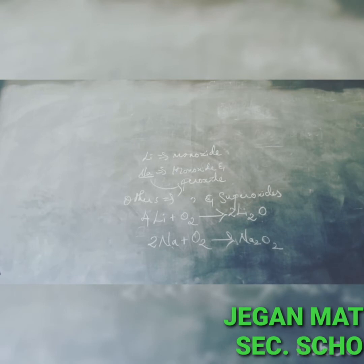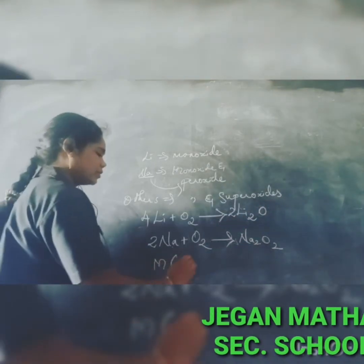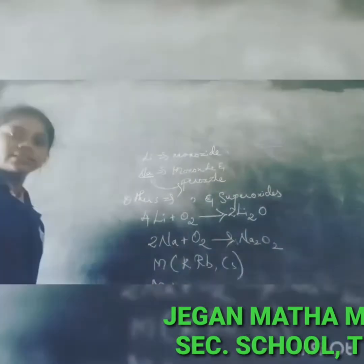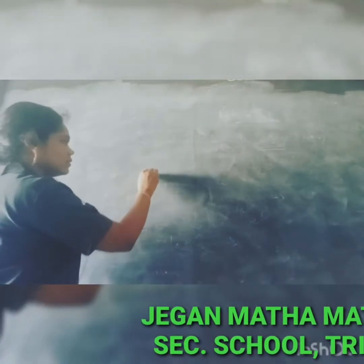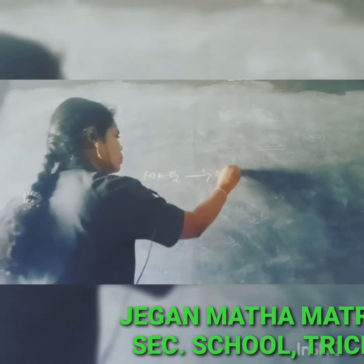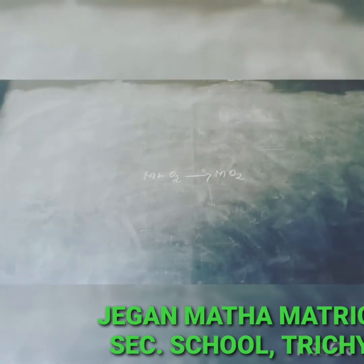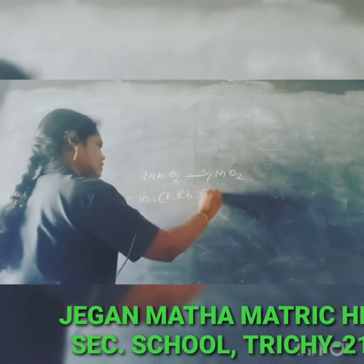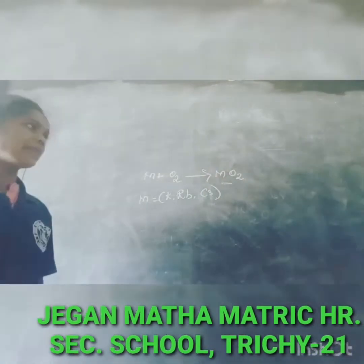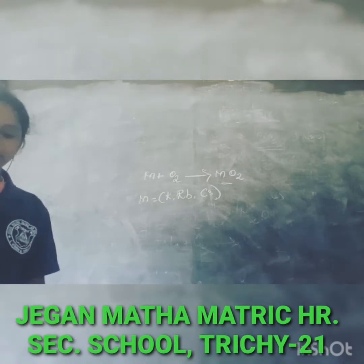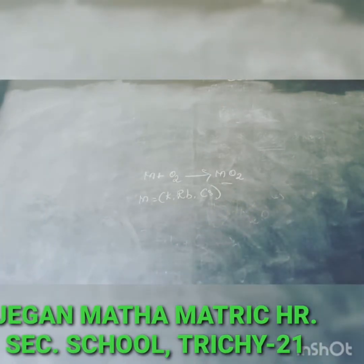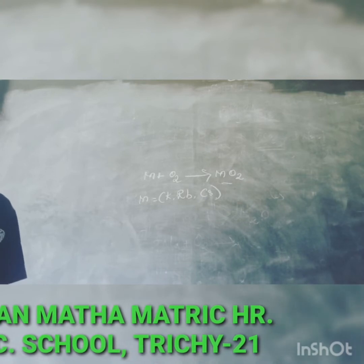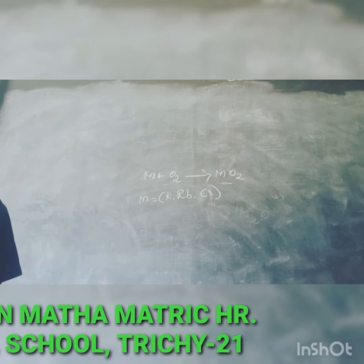The other alkali metals — potassium, rubidium, and cesium — react with oxygen to give superoxides (MO₂). So: lithium reacts with oxygen to give lithium oxide (simple oxide); sodium reacts with oxygen to give sodium peroxide; and metals like potassium, rubidium, and cesium react with oxygen to give superoxides.